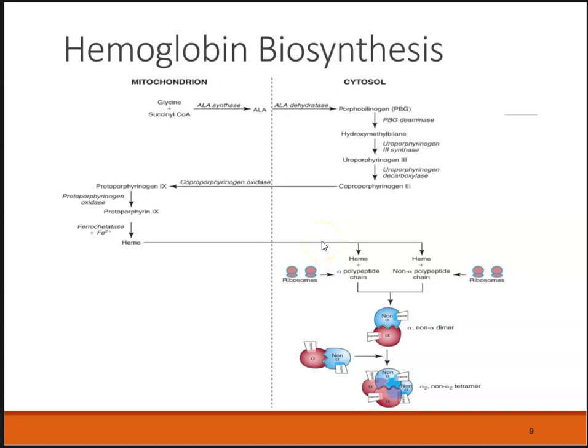How do we make hemoglobin? Inside the cell — this has to be done in a red blood cell that has a nucleus — we have the mitochondria and the cytosol, which is the cytoplasm. One of the first steps in the mitochondria, considered one of the key rate-limiting steps, is glycine and succinyl coenzyme A in the presence of aminolevulinic acid synthase, which is ALA synthase, will make ALA.